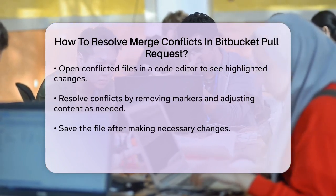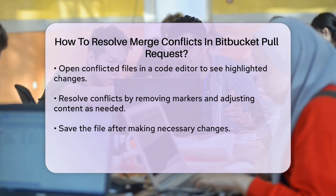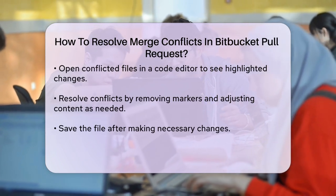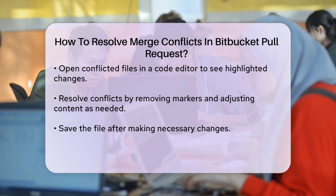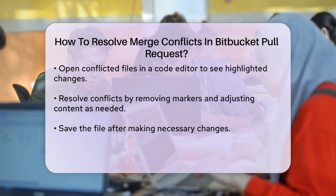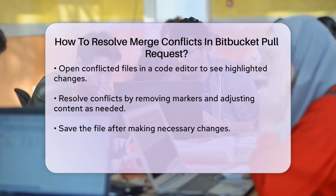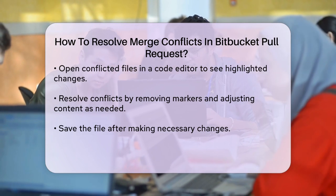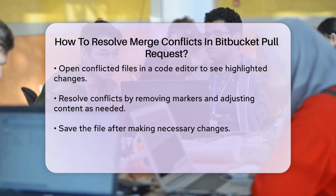To resolve the conflict, remove the conflict markers and correct the content. You can choose to keep only your branch's changes, only the other branch's changes, or make a new change that combines both. Once you've made the necessary changes, save the file.